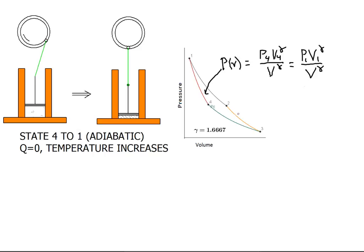In the last cycle process, we again have an adiabatic step, and work will be equal to Cv delta T.